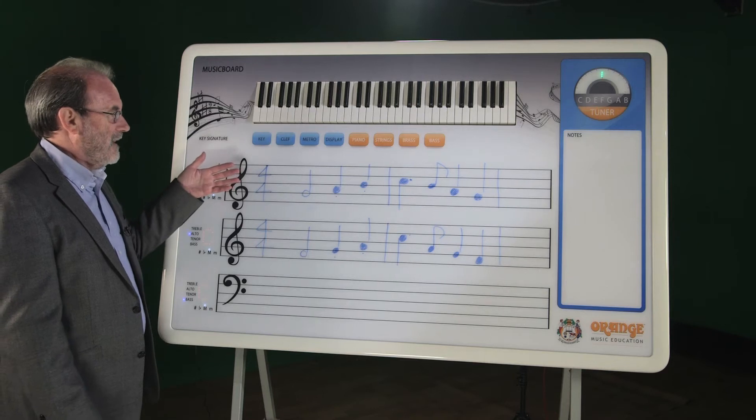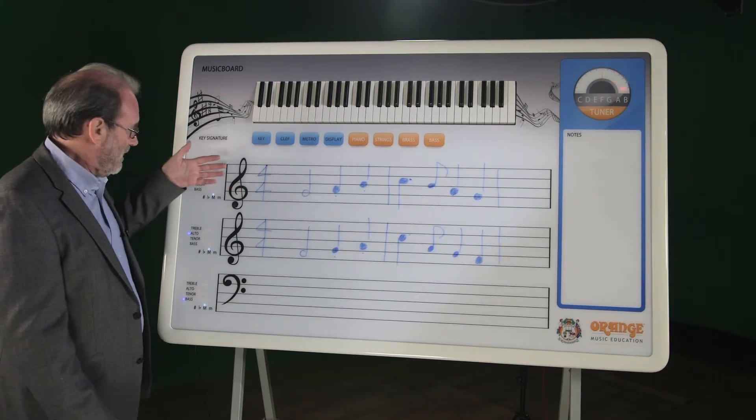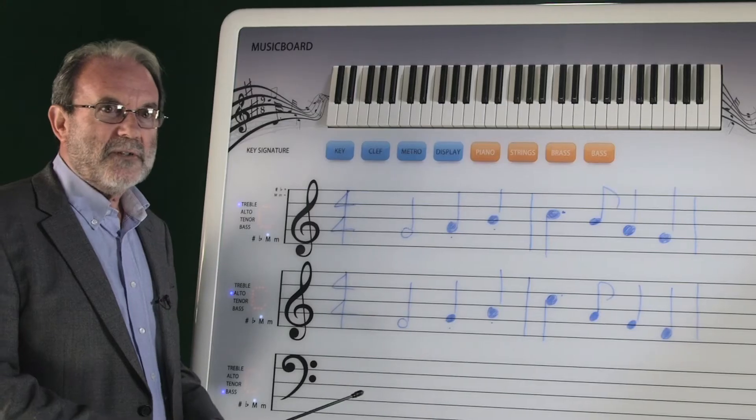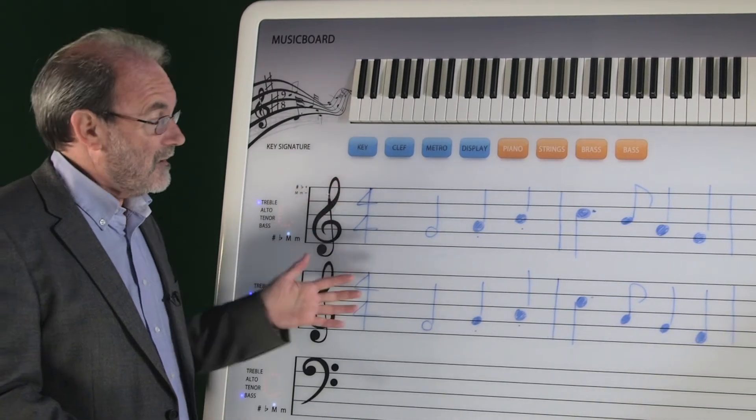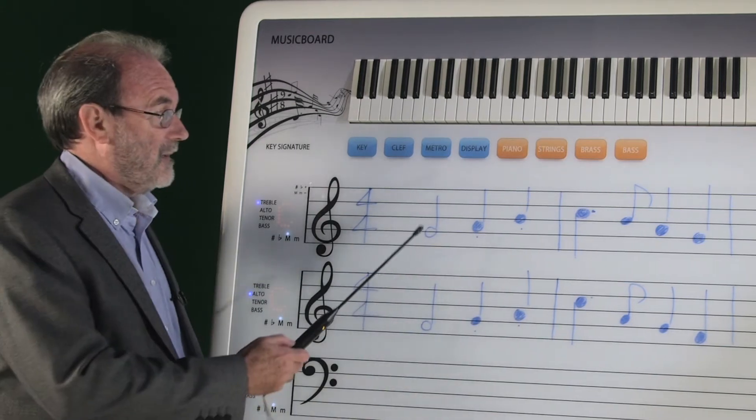Here the teacher has asked the student to transpose this melody into alto clef for viola. What is unique about the Orange Music Board is as soon as the student has written the transposition, we can hear the notes to see if they're correct or not.